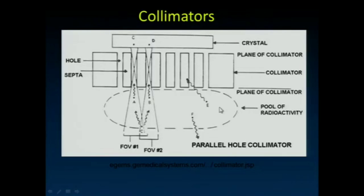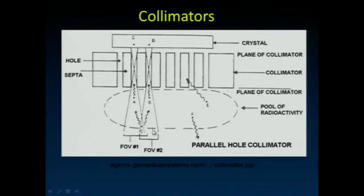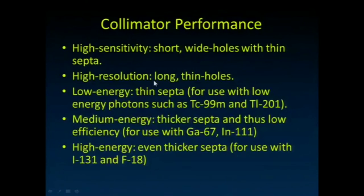The further you get from the nuclear medicine gamma camera, the poorer your resolution becomes. Each hole in the collimator samples a wider area the further away you get, and that wider field of view determines the resolution at a particular depth. It's therefore very important to get the object of interest as close as possible to the gamma camera to maintain high resolution.